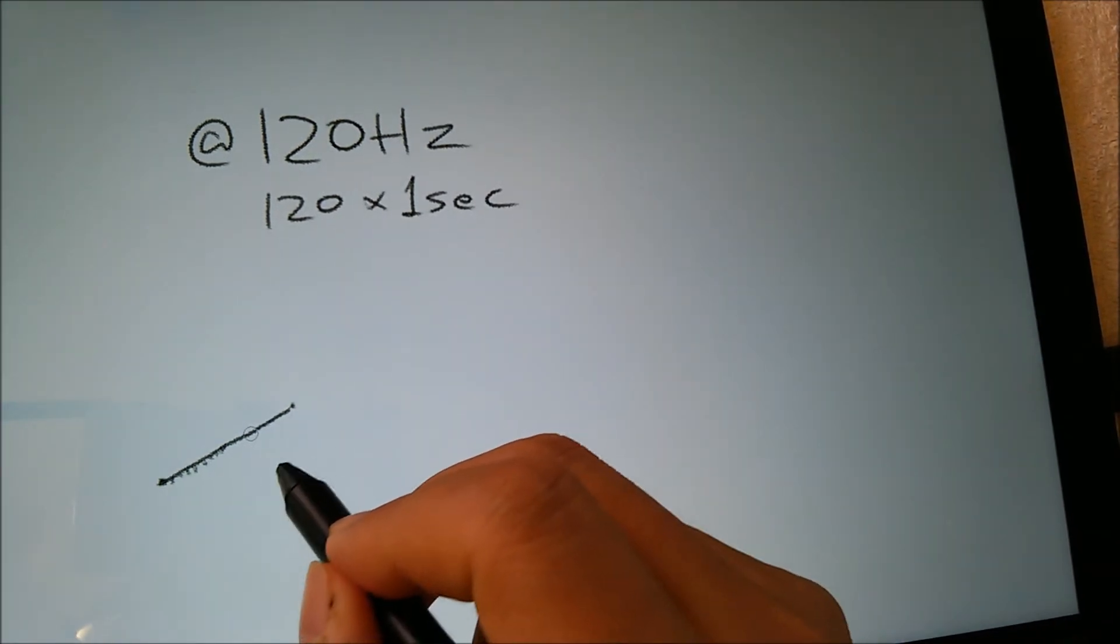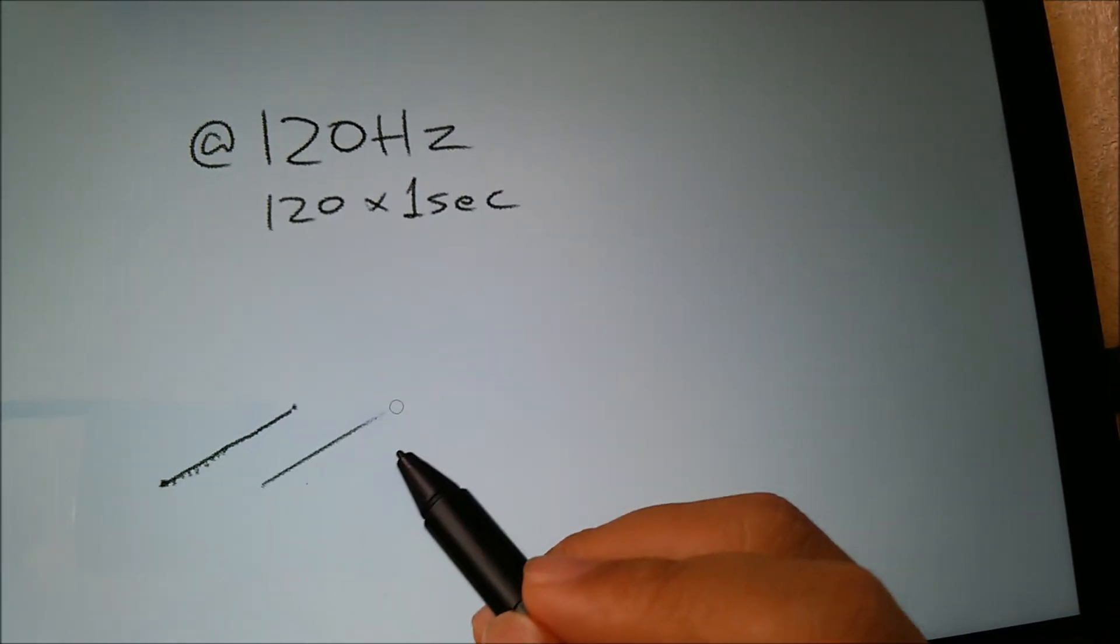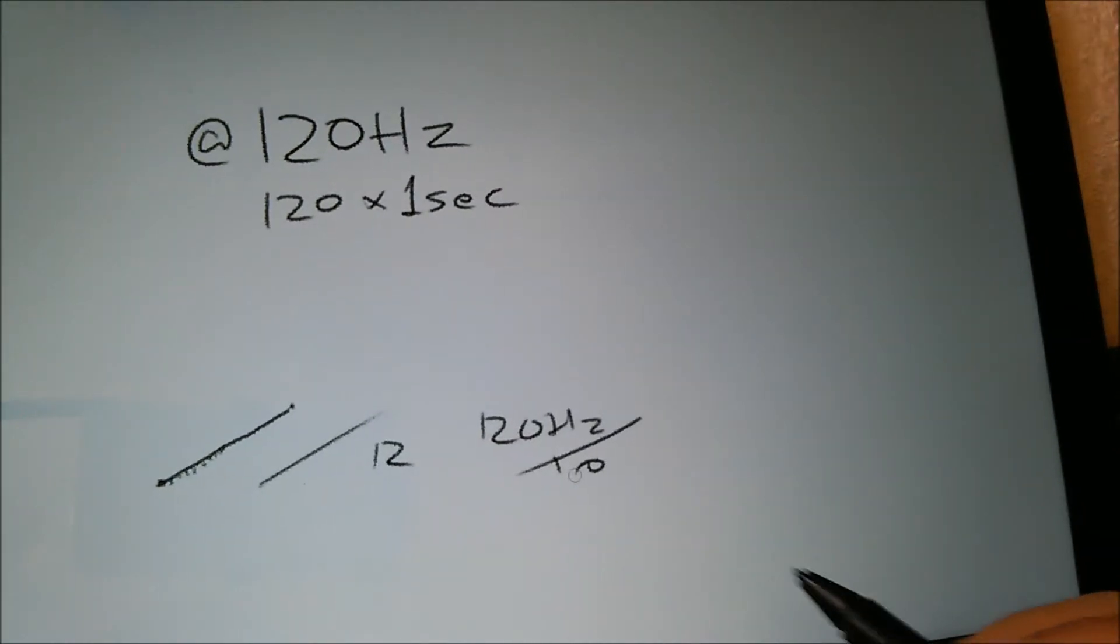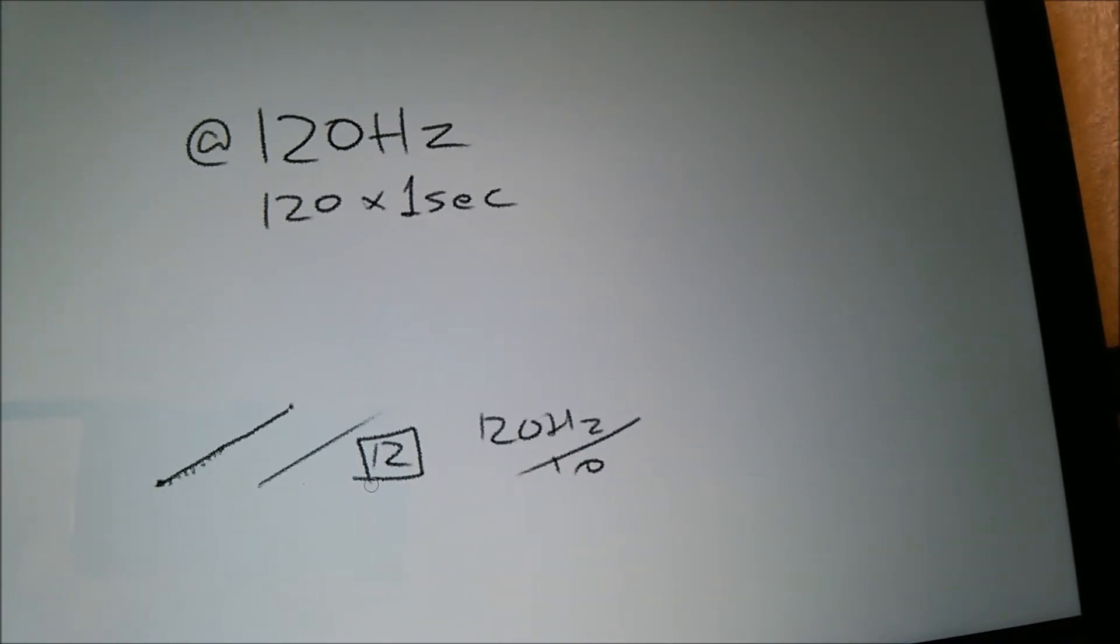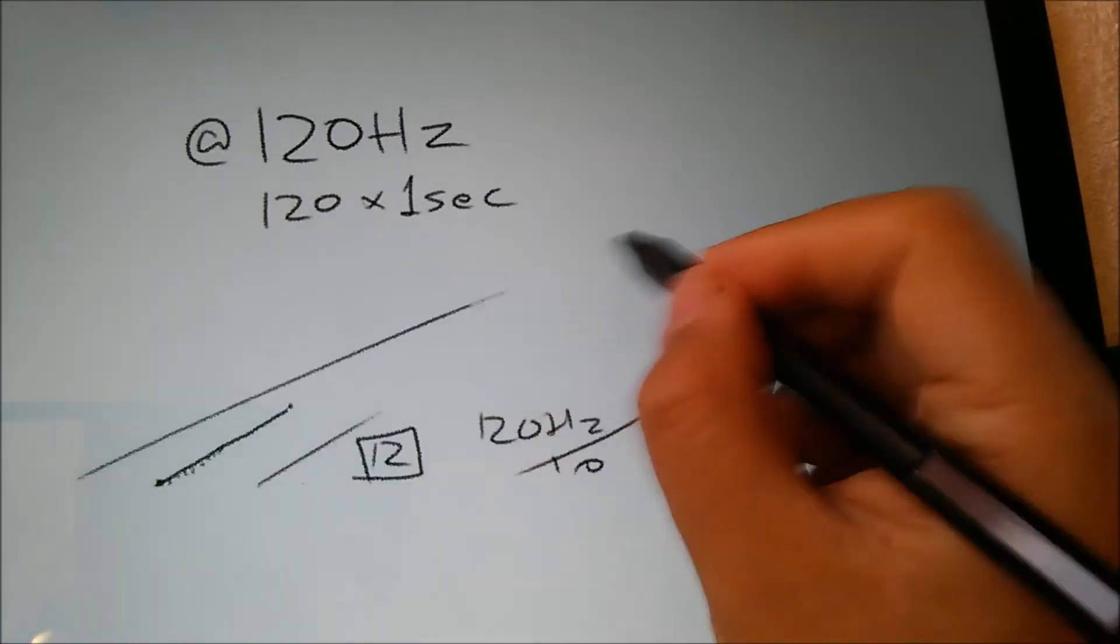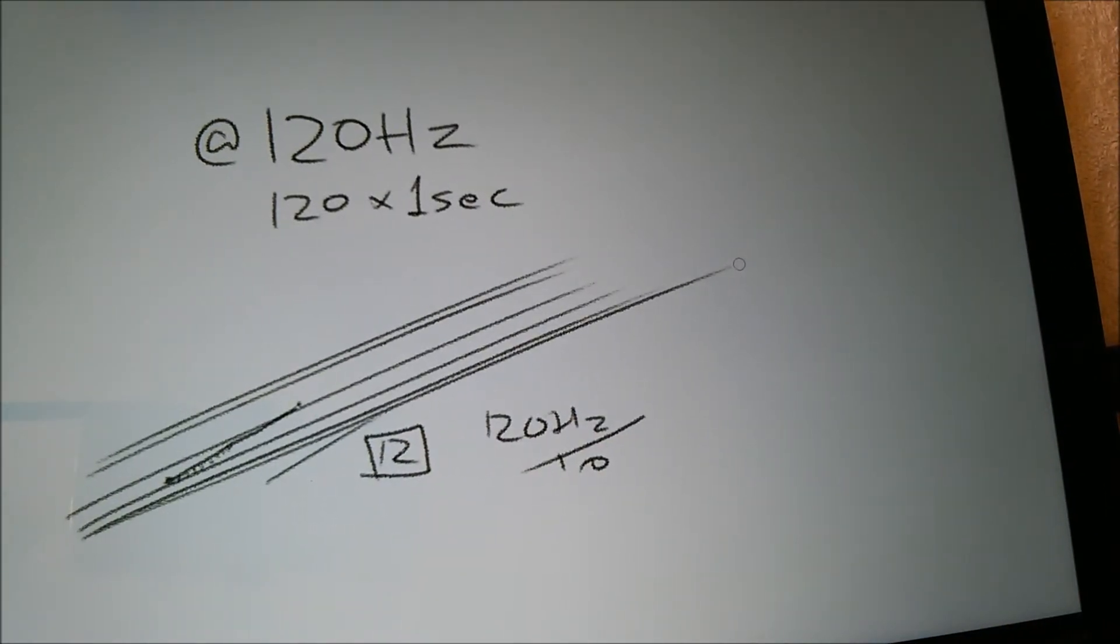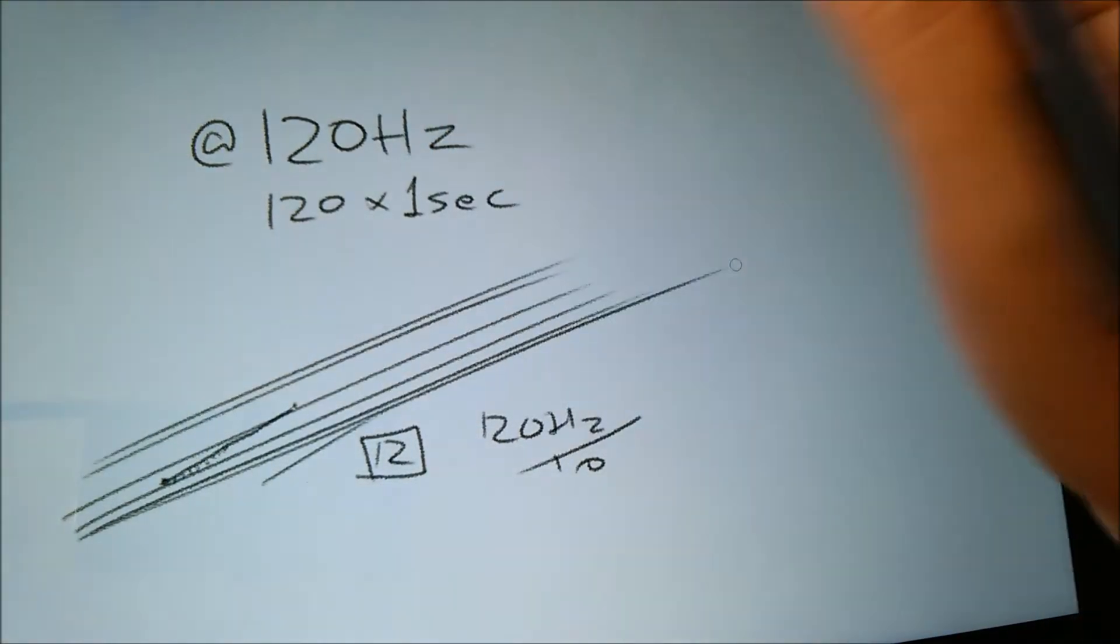If I drew the same line but in a tenth of a second, then instead of 120 data points you only have 12 data points - 120 hertz divided by 10. With less data points the chances are it's going to be straighter. If you can even cut that down to six data points, it's going to be even straighter. Faster is always better because then the computer will use less data points and with less data points it'll try to make a straighter line. So fast, number one.